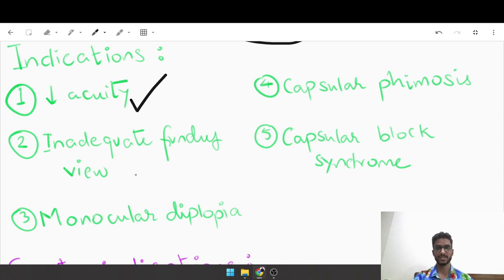The second indication is inadequate fundus view. This could be for a diagnostic purpose - say, for example, in case of a patient with diabetic retinopathy, you want to see the fundus. Or it could be a therapeutic indication - you want to give laser to the retina, perform pan-retinal photocoagulation, or perform a delimiting laser. In cases of inadequate fundus view, do a capsulotomy.